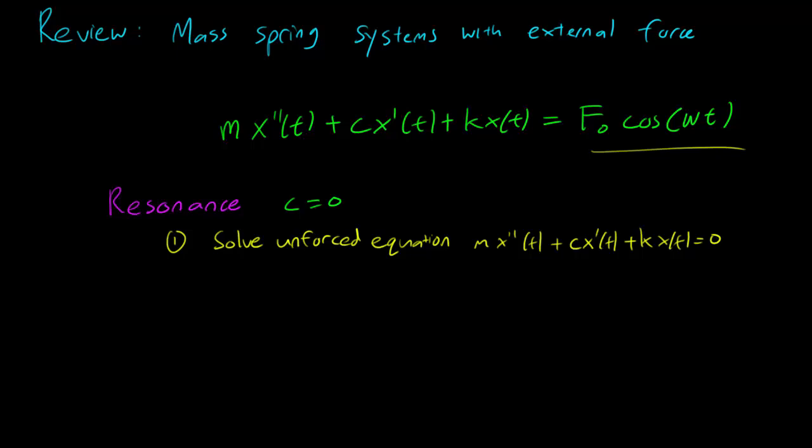To do this we have to solve for the unforced equation. Remember that c is 0, so there's no middle term. So it's just mx''(t) plus kx(t) equals 0. Solving the unforced equation will tell you the natural frequency of your mass spring system. This is the frequency that your spring wants to move in, ignoring the external force.